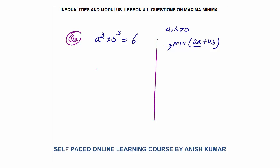Here I will apply the second concept — the product of numbers is constant, their sum is minimum when all are equal. So first I will write a × a × b × b × b = 6. These are five terms and their product is constant.